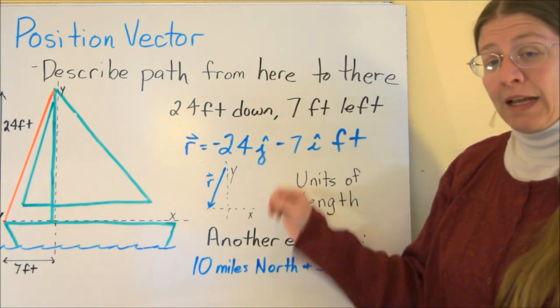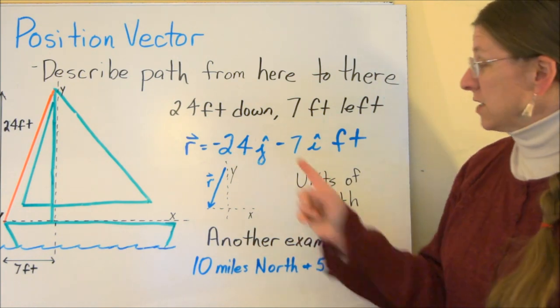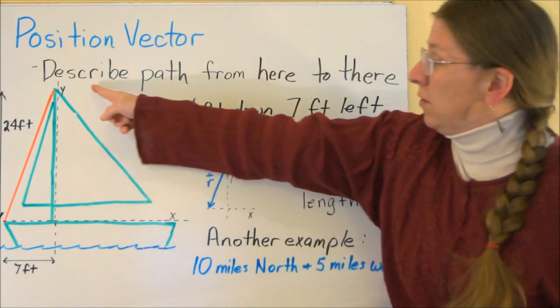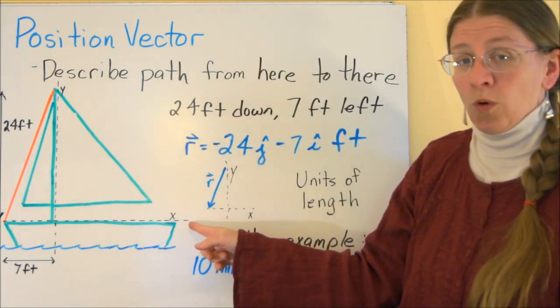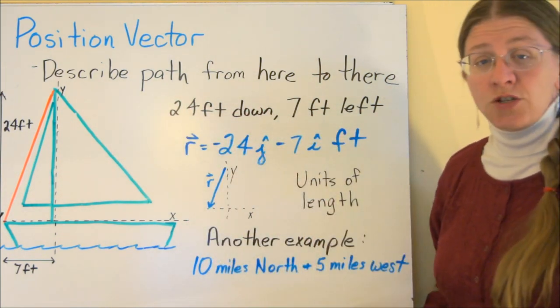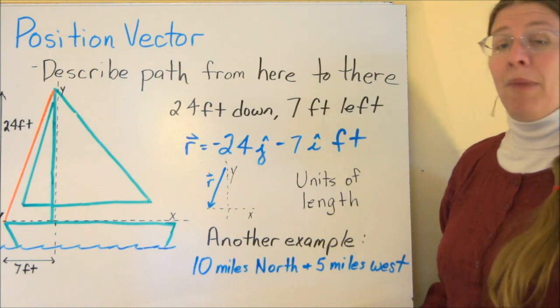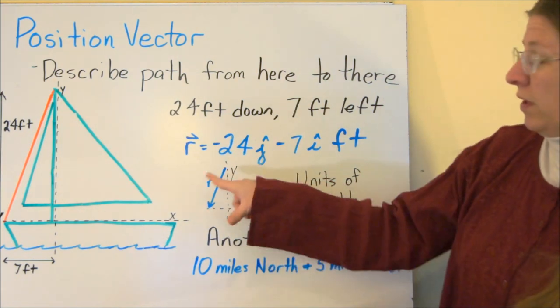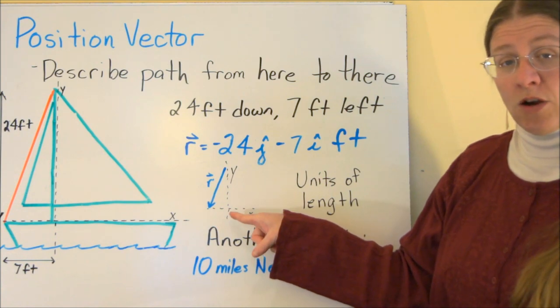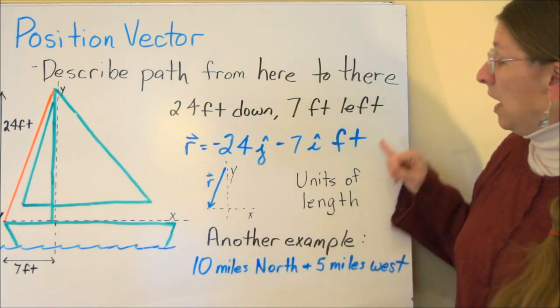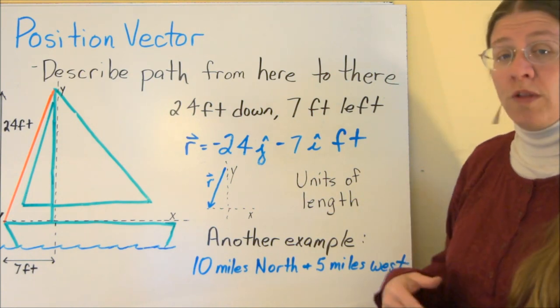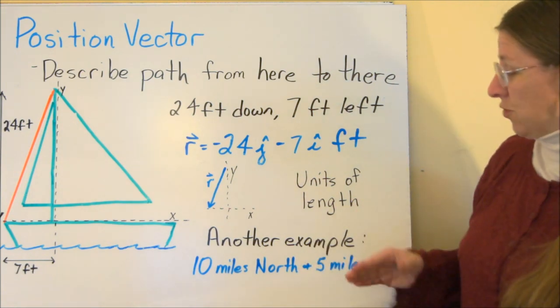If I use the i and j that I have from Cartesian coordinate form, where these are along the y-axis and along the x-axis, which are defined for you x and y like normal, then I could say that the position vector is minus 24j minus 7i in feet. This is a picture of what that vector would look like on a Cartesian plane without its boat. The units here are going to be in units of length, because I'm saying go this many feet in these directions.